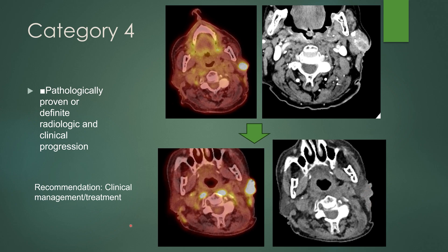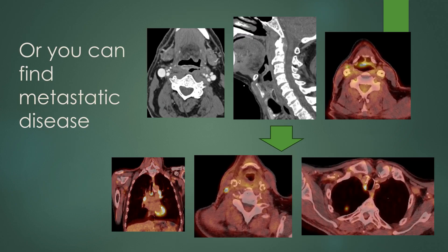On follow-up imaging, you can find the unexpected — like new metastatic disease. This patient has cancer of the epiglottis, with irregular nodular contour of the right aspect of the epiglottis extending to the aryepiglottic fold and avid FDG uptake. On follow-up post-treatment, this patient did well at the primary site but now has level 3 lymphadenopathy, paratracheal mediastinal lymphadenopathy, and pulmonary nodules.